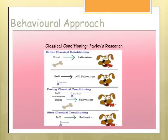Pavlov found that before conditioning, food was the unconditioned stimulus that produced the unconditioned response of salivation — when the dog saw food, they salivated. The bell was the neutral stimulus and produced no response. During conditioning, the bell and food were paired together. After conditioning, the bell alone — which became the conditioned stimulus — produced the conditioned response of salivation. Just hearing the bell by itself was enough for the dog to produce their conditioned response.